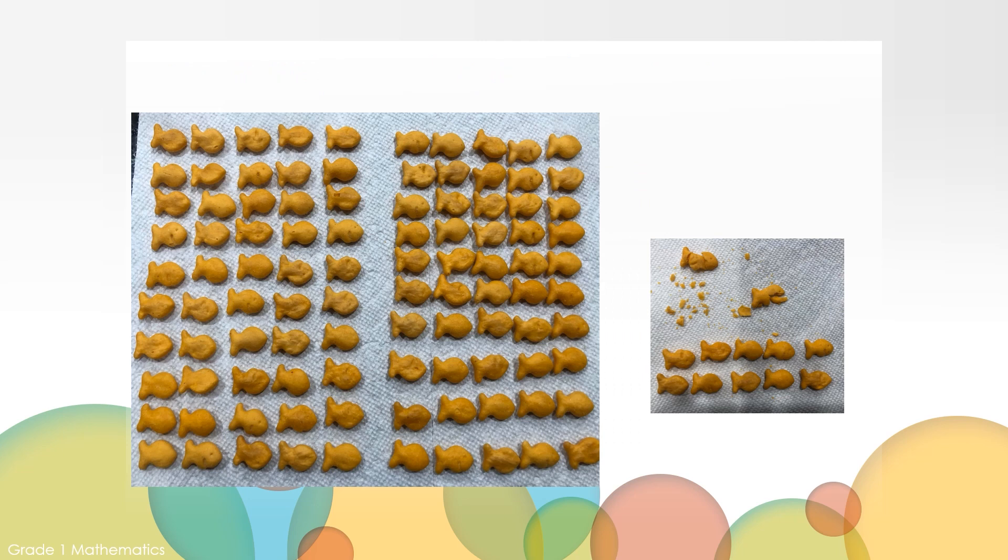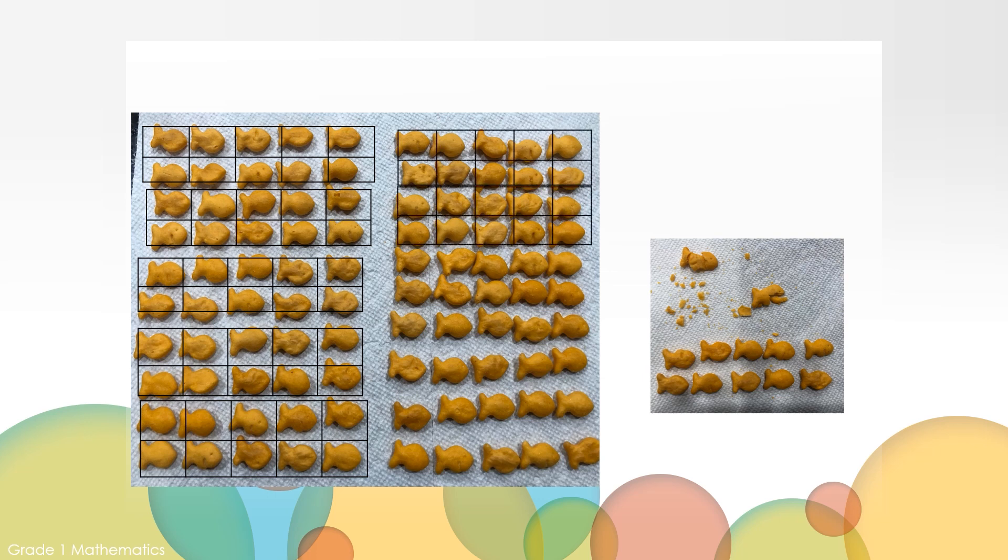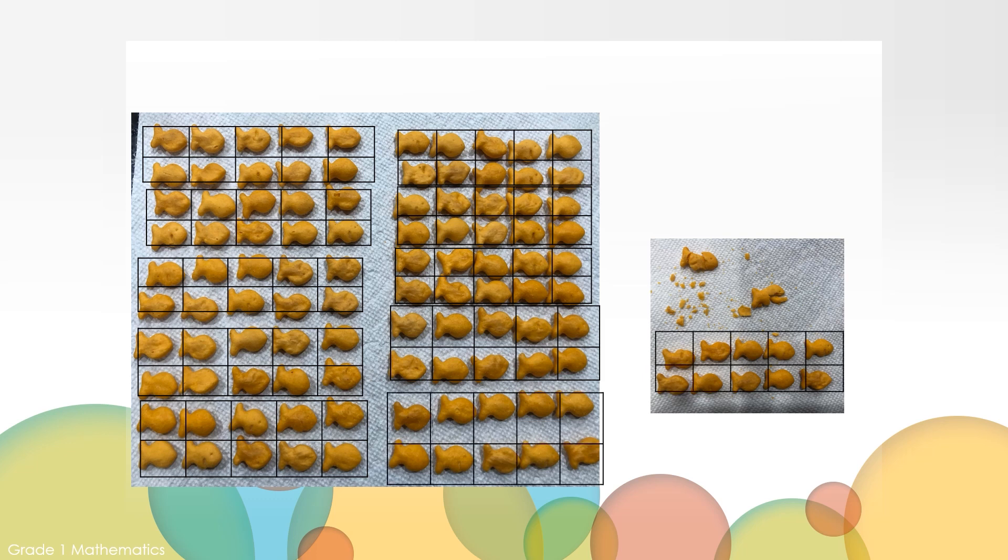The tall container. Let's count these. 10, 20, 30, 40, 50, 60, 70, 80, 90, 100, 110. And there's two little pieces left over. 111, 112. The tall container holds 112 goldfish.